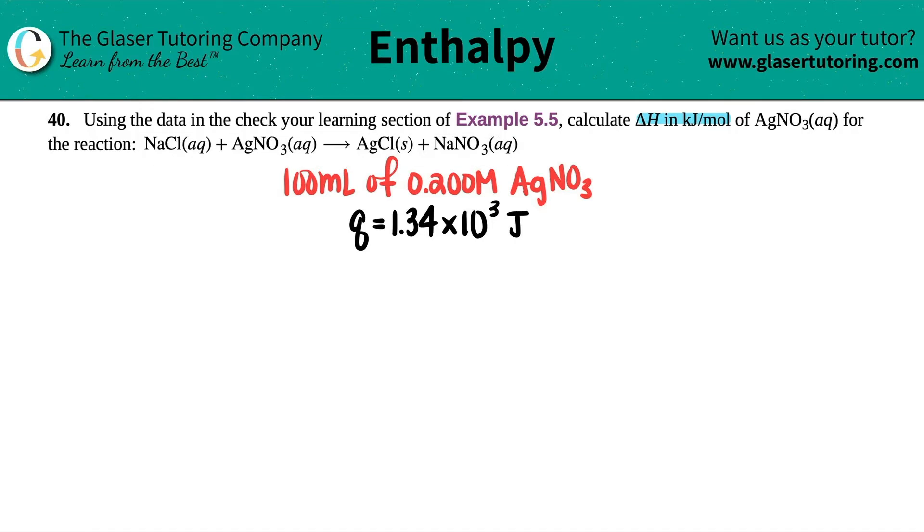Now I went back to Example 5.5 to get the information we need to figure out this problem. There's basically two things we need: we need to know how much of the silver nitrate solution was used, so there was 100 mL of a 0.2 molarity solution, and we need to know how much heat was made during that reaction. In this case, there was 1.34 times 10³ joules that were produced.